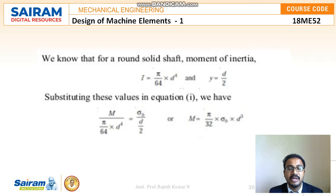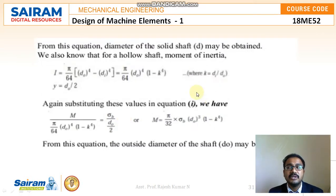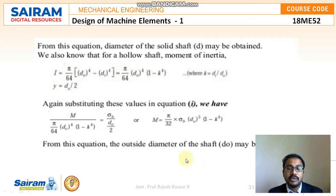Substituting into the bending equation — M / (π/64 × D⁴) = σB / (D/2) — gives M = (π/32) × σB × D³, from which the diameter of a solid shaft can be obtained. For a hollow shaft, the moment of inertia uses (Do⁴ − Di⁴), and substituting gives M = (π/32) × σB × Do³ × (1 − k⁴), from which the outer diameter Do may be obtained.